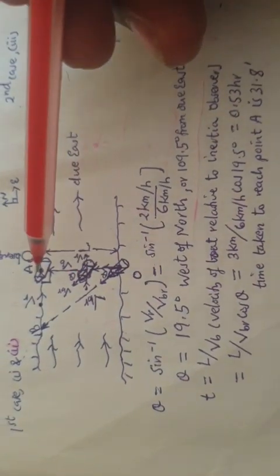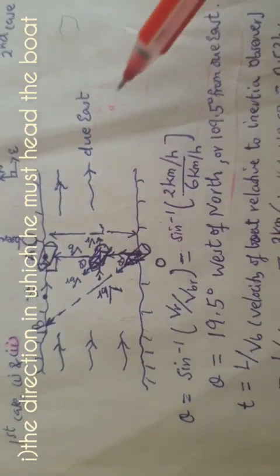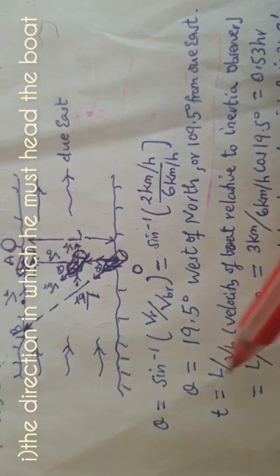By using these components, this is how you can solve the direction where the ferryman must point the head of the boat so that he will reach the destination A without going down the stream, as this river flows down the stream.